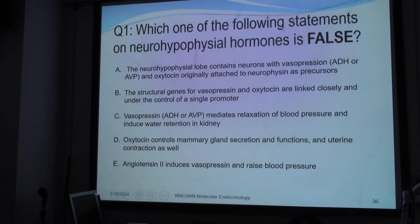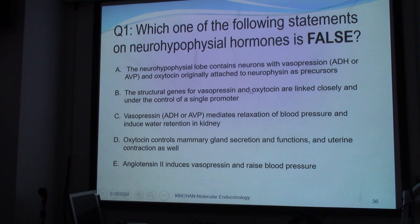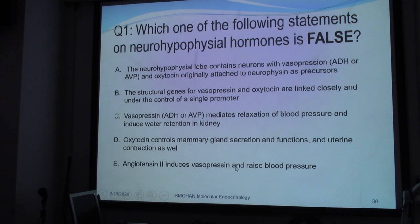Finally, there is a question on neurohypophysis hormones: which of the following is incorrect? A — the neurohypophysis contains neurons with vasopressin and oxytocin originally attached to neurophysin as precursors. B — the structural genes for vasopressin and oxytocin are linked closely and under the control of a single promoter. C — vasopressin mediates relaxation of blood pressure and induces water retention in the kidney. D — oxytocin controls mammary gland secretion and uterine contraction. The answer is B, because the two genes are linked but are not controlled by a single promoter.